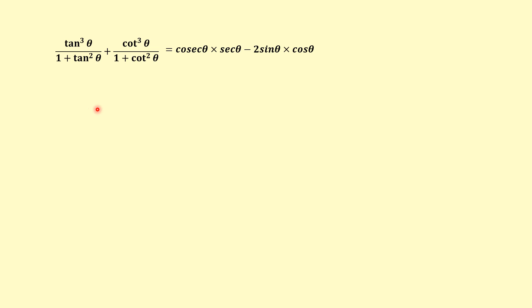Hello students, welcome. In this video we will prove: tan³θ / (1 + tan²θ) + cot³θ / (1 + cot²θ) is equal to cosecθ · secθ minus 2sinθ · cosθ. This question is from the Class 10th sample question paper. We will prove it.